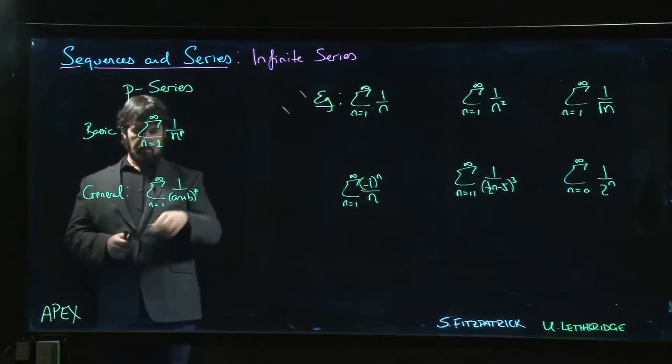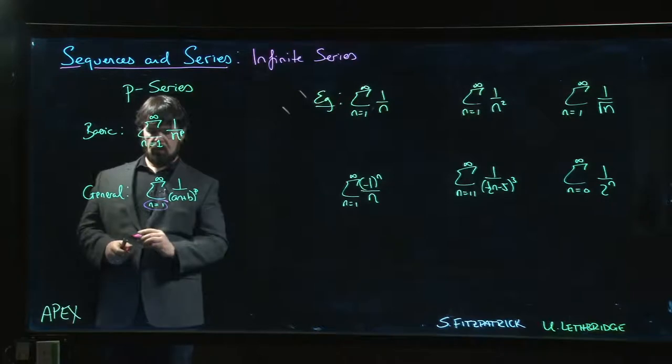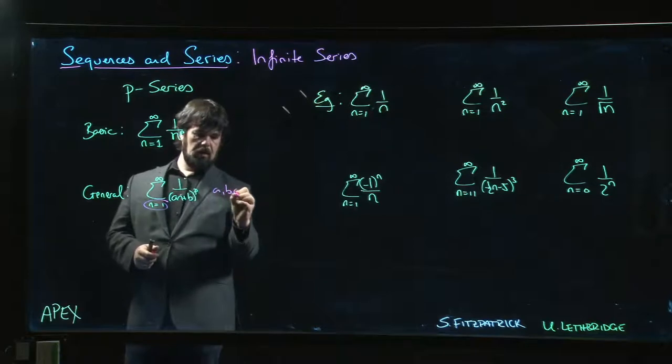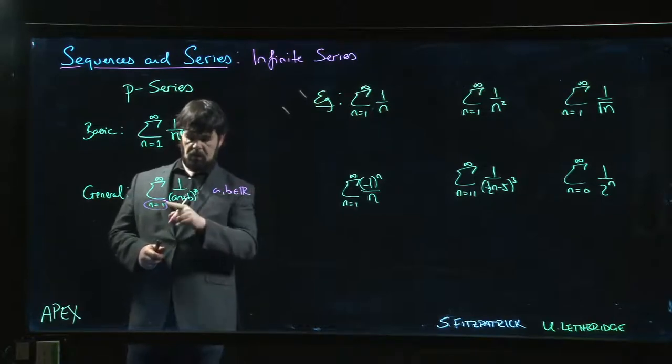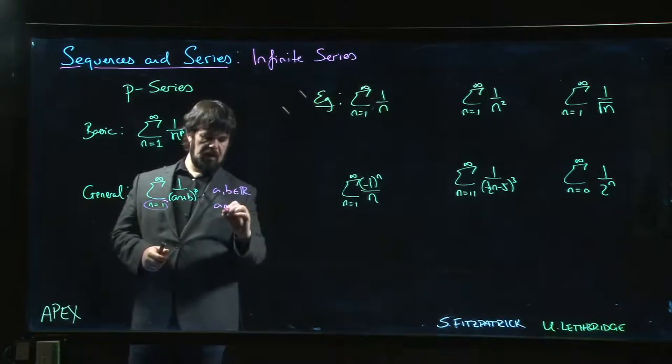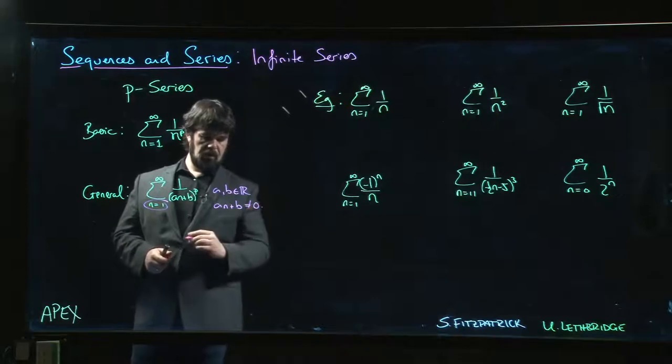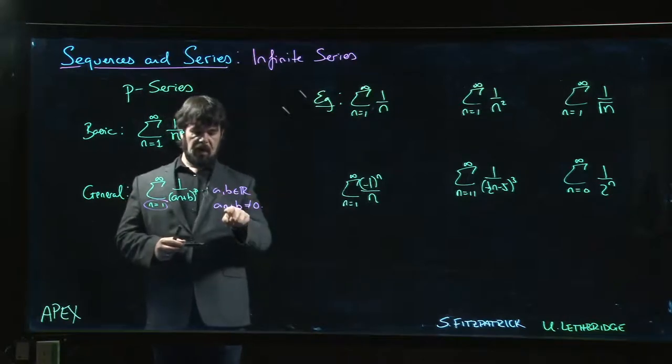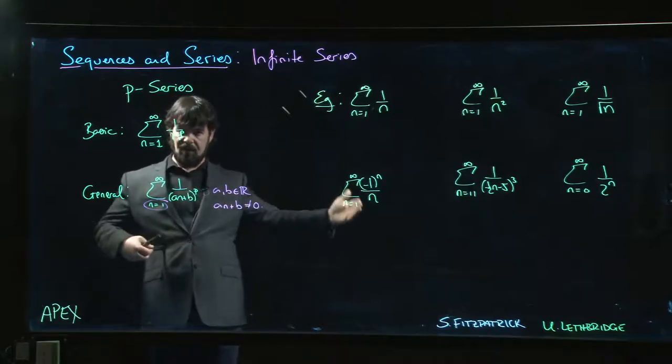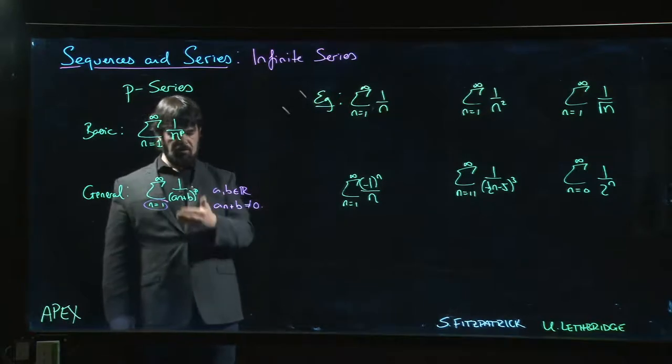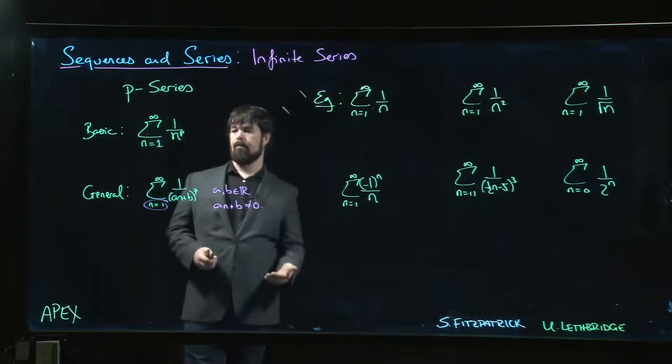The only thing you've got to be careful about here is the starting point. I've written n equals 1, but we'd have to check to make sure - a and b here could be any real numbers, but we'd have to check to see when does a n plus b equal 0. We want to watch out for that, make sure it's not equal to 0. If there is a 0 for this at a positive value for n, I better start my series after that or it's not going to be defined. We won't even get to talk about convergence because there's going to be one term in this series that blows up.